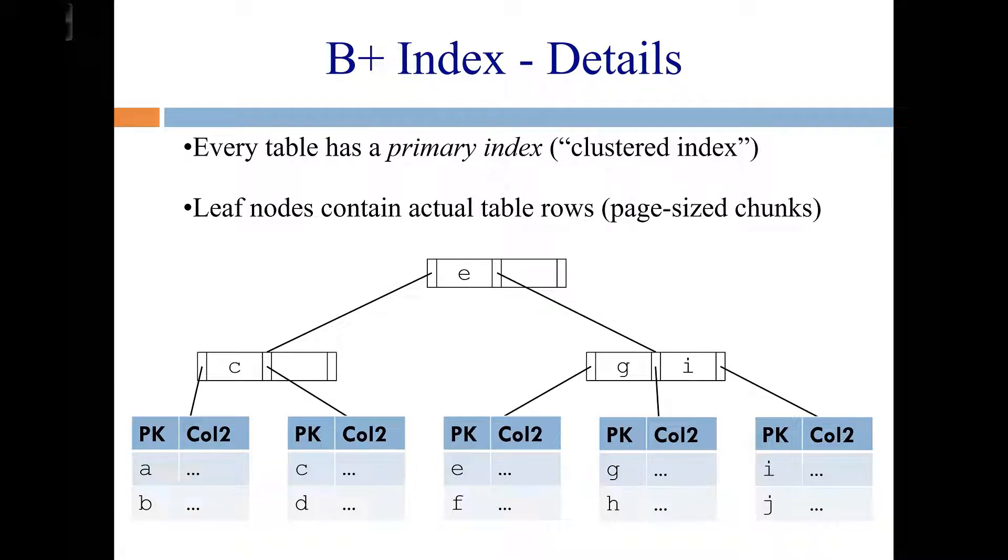We usually draw the table as one contiguous big list of rows, but really the rows are broken up into multiple pages. So each one of these leaf nodes here is a page, and each of them contain some of the rows in the table. So let's look at one of them here. Whatever the primary key in this table is, it's just these letters. So here are some primary keys for that table. Here's the primary key C and the rest of the row associated with primary key C.